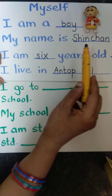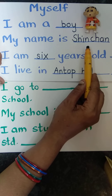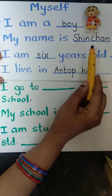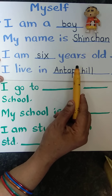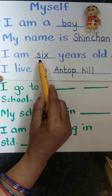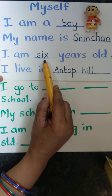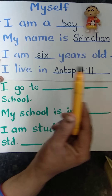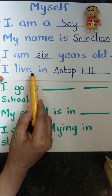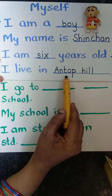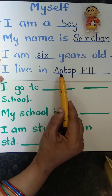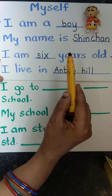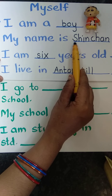My name is — did you all write your name? Next, we wrote 'I am 6 years old'. You should write the spelling, don't write the number. And if you are 7 years old, write the 7 spelling. Next, 'I live in' — here you wrote your area name. The first letter should be capital. Your name also — the first letter should be capital.